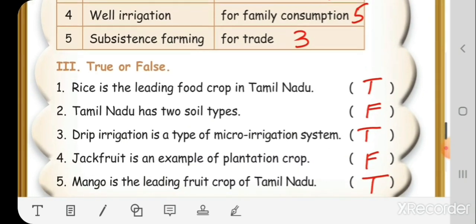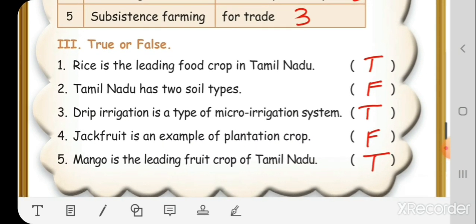Tamil Nadu 3. True or False. Rice is the leading food crop in Tamil Nadu. True.